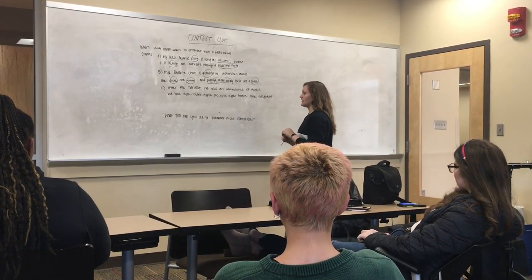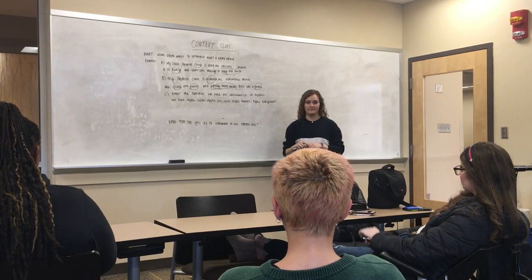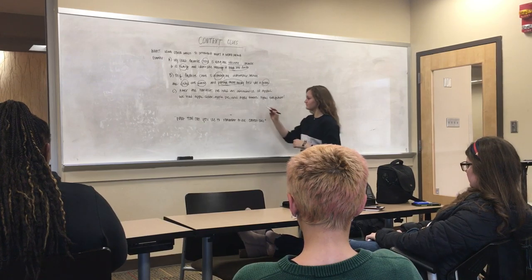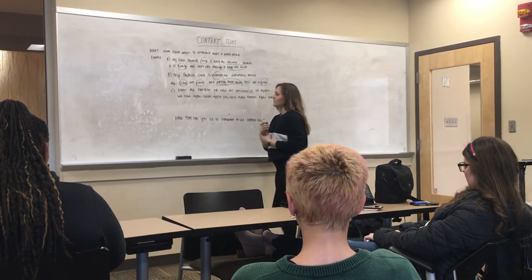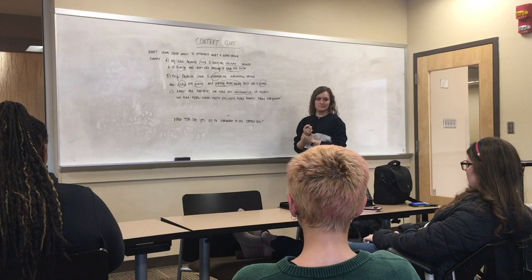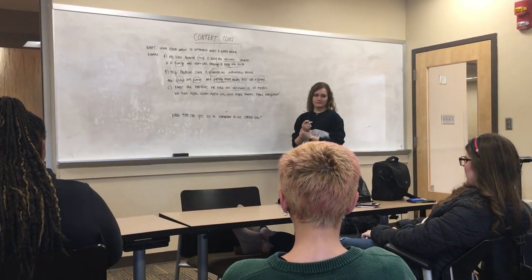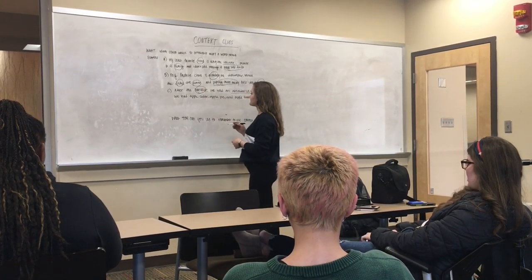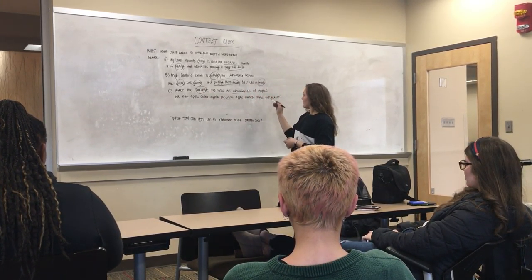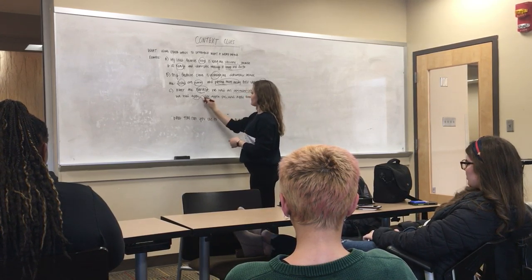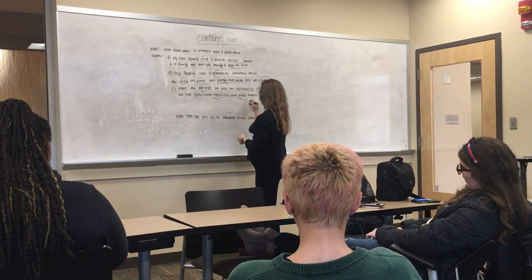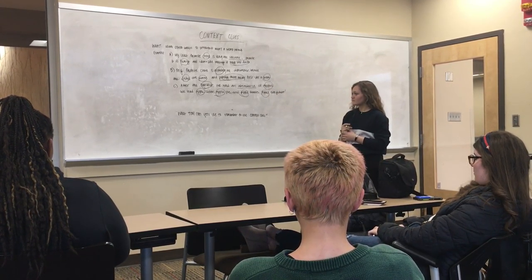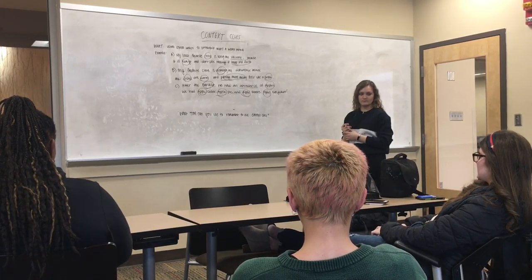Raise your hand and do the third example for me. A word I don't know the meaning of is abundance. I can figure out what that means by looking at it — I know it was a harvest. When you have a harvest, you collect things, and it says apple cider, apple pie, and apple fritters — apples everywhere. So I can see that there are a lot of apples, and I can conclude that abundance means a lot.